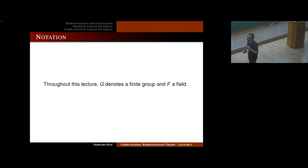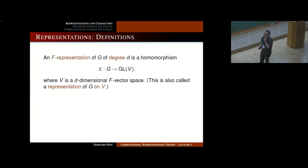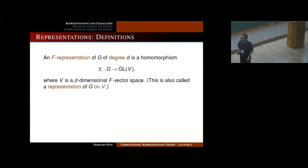G is always a finite group, and for the time being F is just any field, which allows me to introduce the basic notions of representations over any field. A linear representation of a group G of degree D is a homomorphism from G to GL(V), where V is a D-dimensional F vector space. This is what we would call an F representation, or representation of G on V.